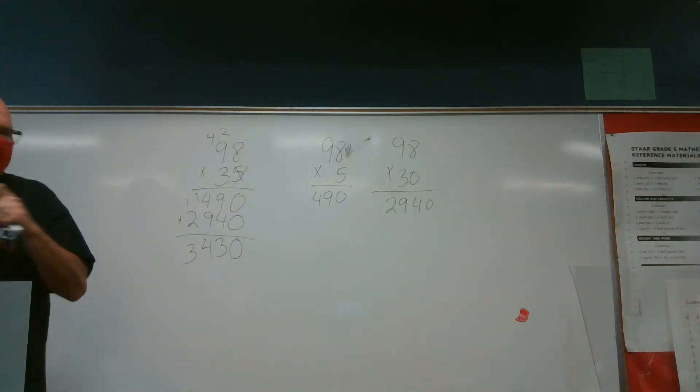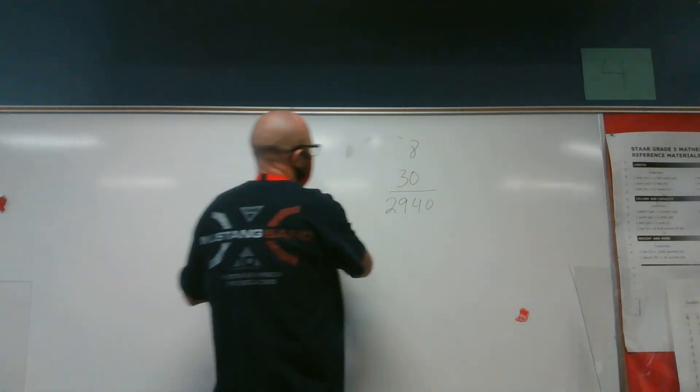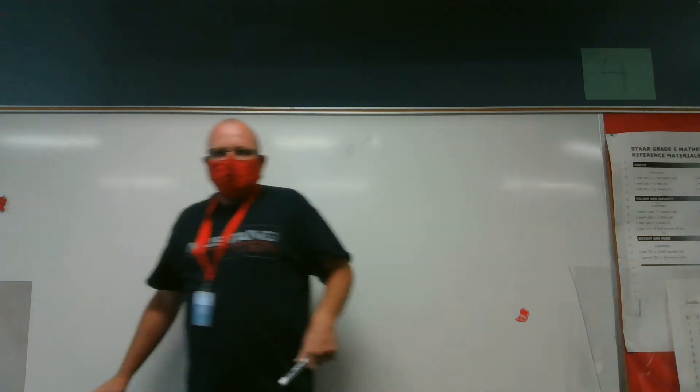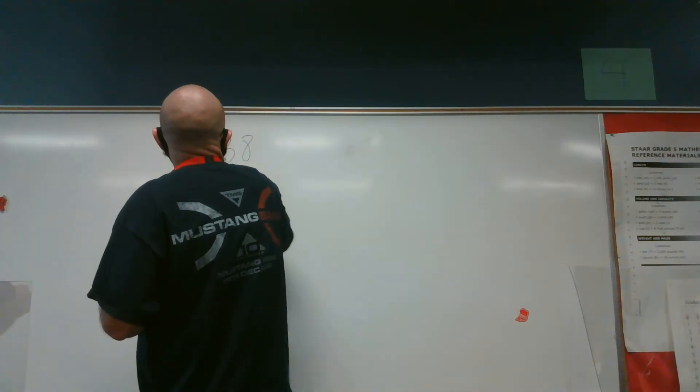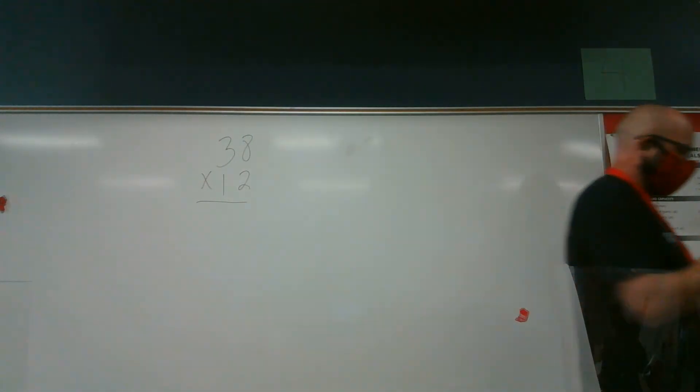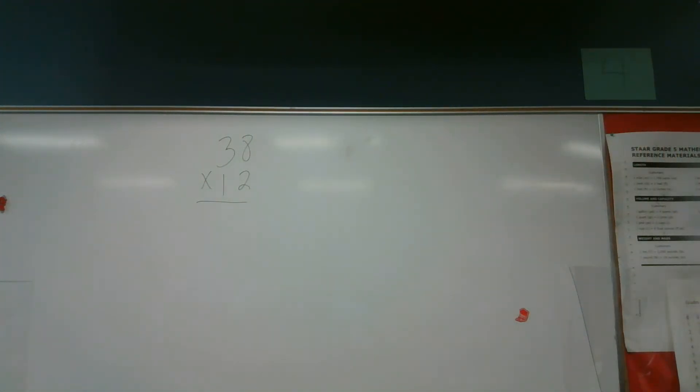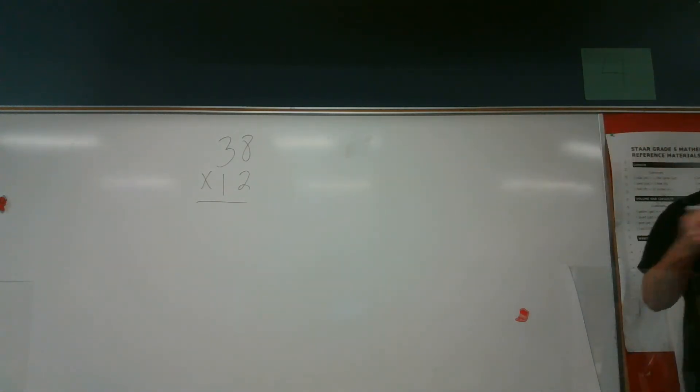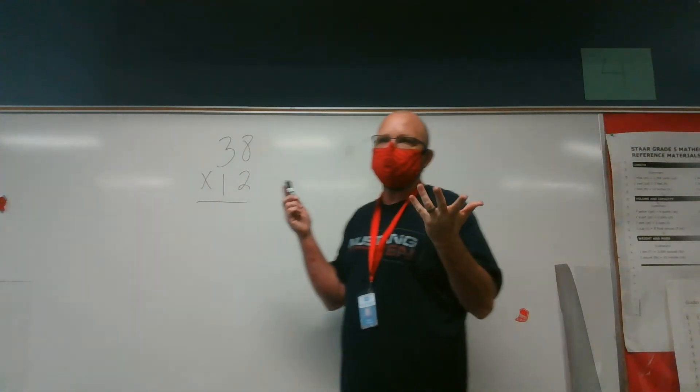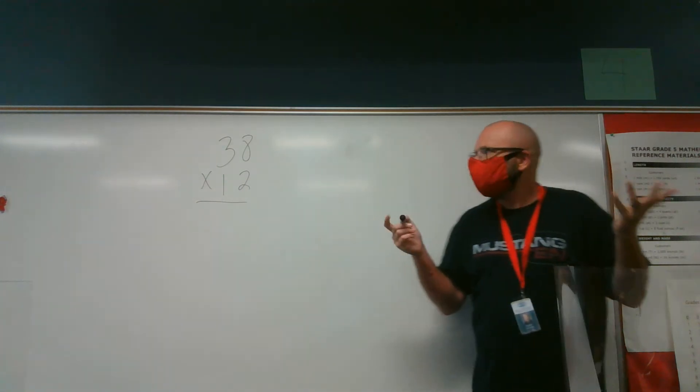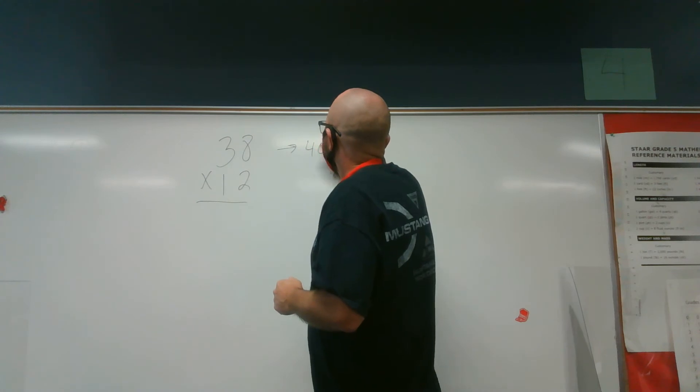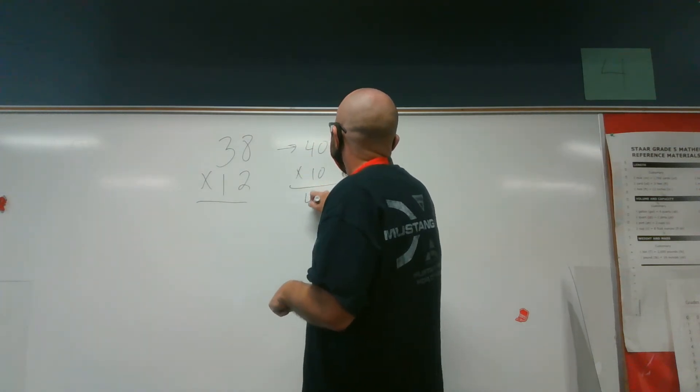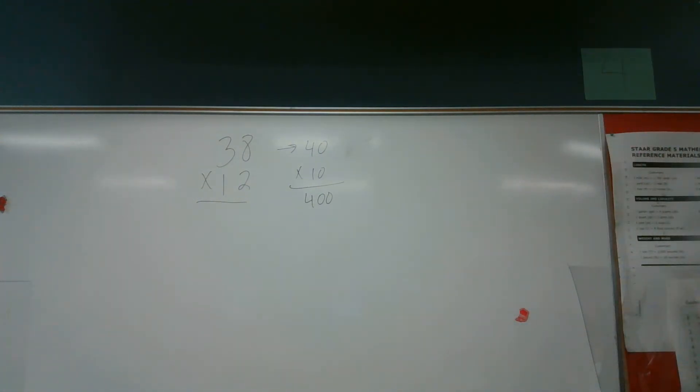Let's look at a step that I want you to also think about. Now, we have talked about estimation previously. So if I have the problem 38 times 12, if I want to estimate this, I want to get an idea what my answer would be. I want to get an idea of what my answer might be near. I don't want to get the exact answer right now. That's too much thinking. So 38 is close to 40. 12 is close to 10. So my answer needs to be somewhere near 400.